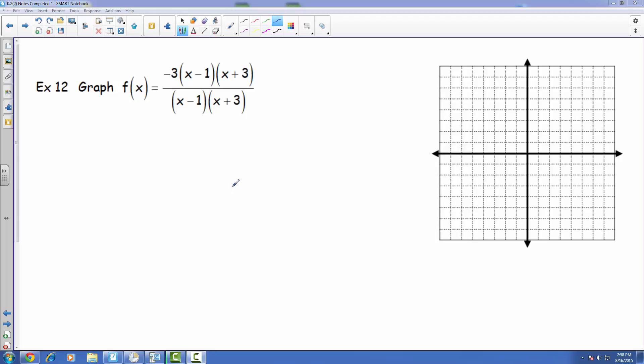Here we are at example 12 from the 0.2 number 2 set of notes. We're asked to graph this rational function. The beautiful thing about this is that everything is actually already factored for us.